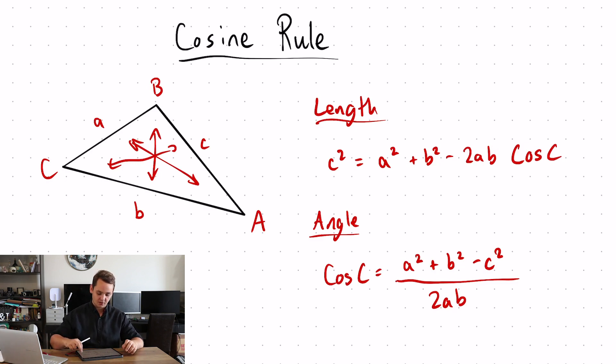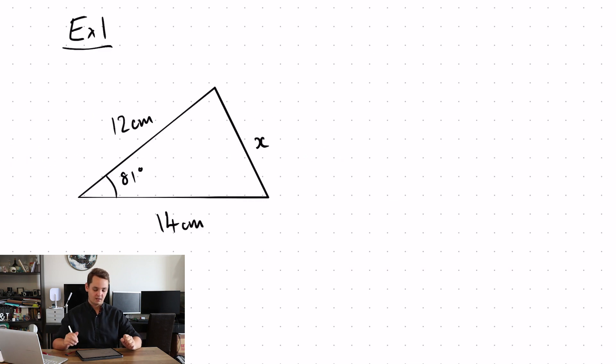So let's put this into practice. First of all let's have a look at a length question. So with this triangle I'm going to label my unknown side C and the other two sides A and B. Either way around it doesn't matter but I'm going to call 12A and 14B.